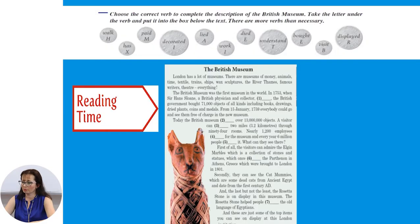Today, the British Museum holds over 13 million objects. A visitor can walk 2 miles — 3.2 kilometers — through 94 rooms. Nearly 1,200 employees work for the museum and every year 6 million people visit it.